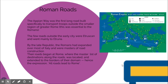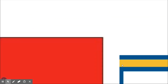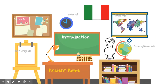The Appian Way is the main road through Rome. There were a few roads already existing that were Etruscan — the people that came before the Roman Empire; 'Etruscan' is why it's called Tuscany in Italy. By the late Republic, the Romans had expanded over most of Italy and were masters of road construction. Their roads began at Rome, where the master list of destinations was located, and went all the way to the ends of their land — that is why all roads lead to Rome.